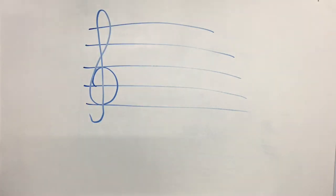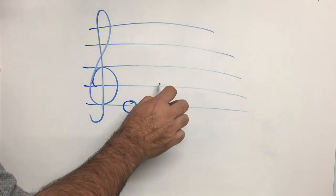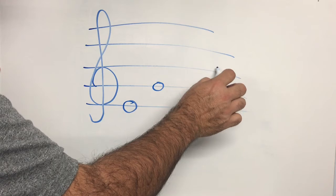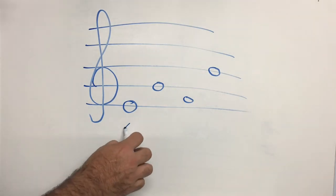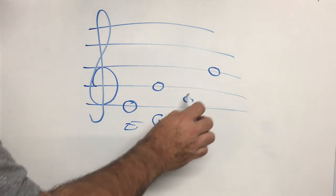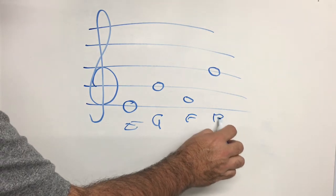I'm going to write a few notes and you have to see if you can work out what the names of them are. Okay, first one, E. Second one, second line, G. First space, F. Middle line, B.